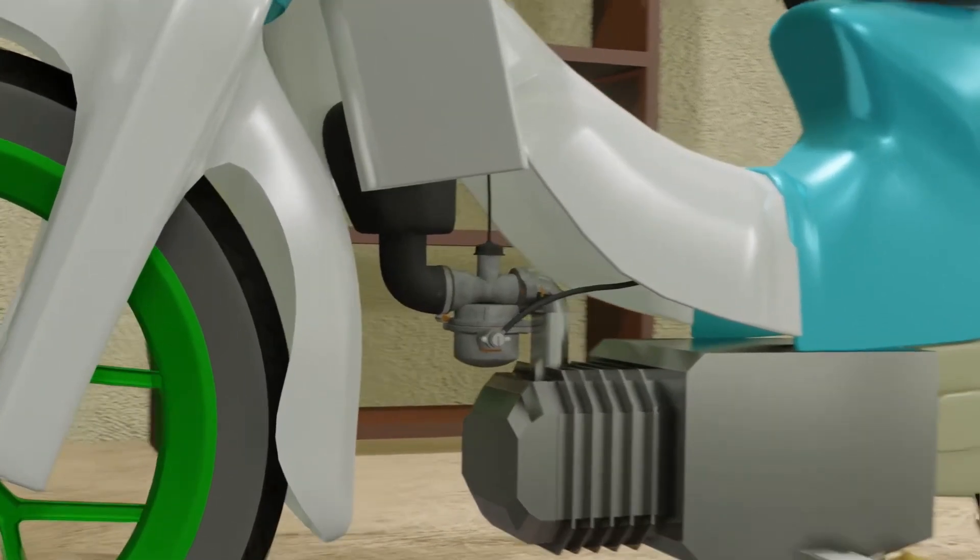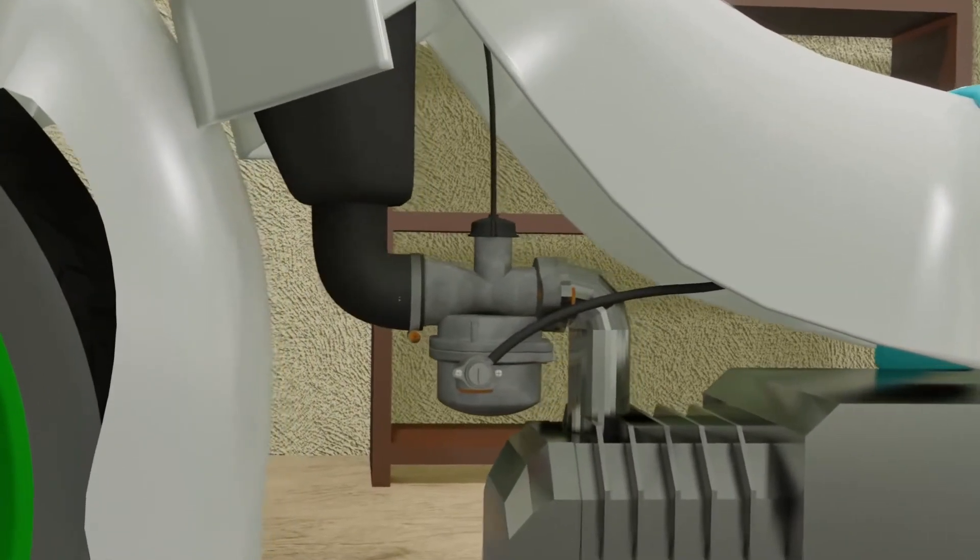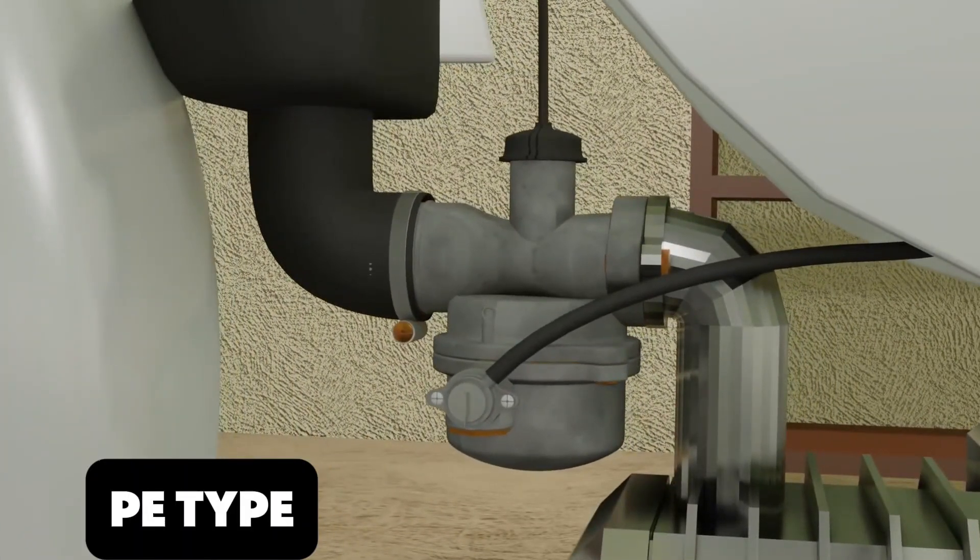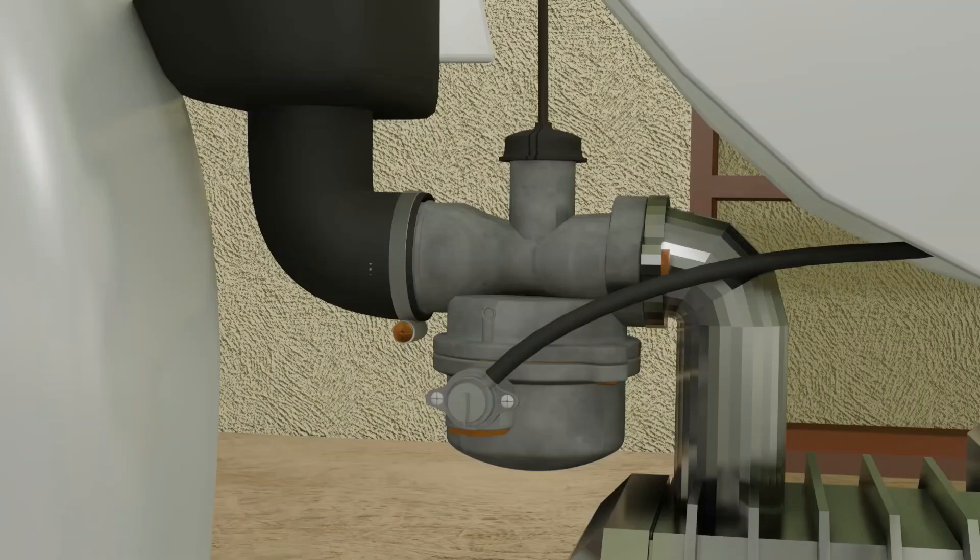The first step, we remove the carburetor from the motorbike. The carburetor I simulated is a PE type carburetor that is most widely used on motorcycles. If you see the carburetor installed on the intake pipe, then the first step is to remove the intake bolt.